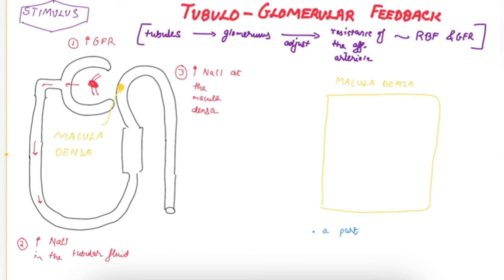The macula densa is a part of the thick ascending limb which passes between the afferent and efferent arteriole. It is also part of the juxtaglomerular apparatus, along with the granular cells of the afferent arteriole and the extraglomerular mesangial cells or Lacis cells. It expresses the same transport proteins as the thick ascending limb.